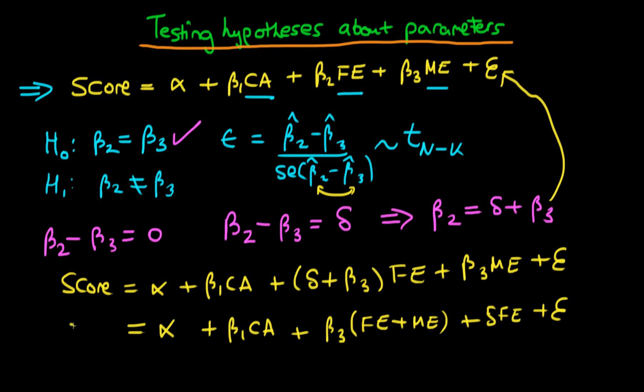So the idea here is that we would run a regression of score on three different independent variables: class attendance, father's education, and the sum of father's education and mother's education. And then what we would do is a t-test on the delta term, because essentially we are testing whether this delta is actually different from zero.